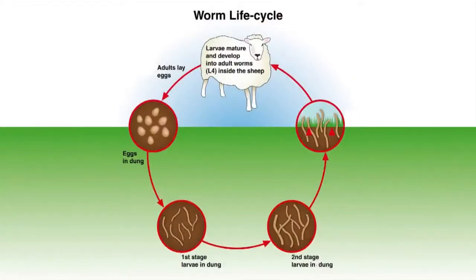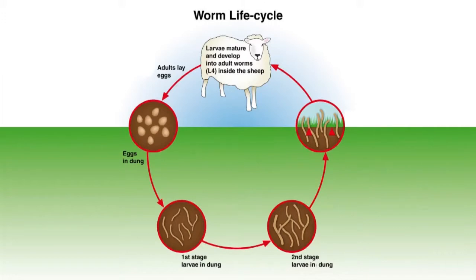The other thing we can use them for is to test whether or not our drench has actually worked. If we look at the life cycle, we go in and treat the sheep with an anthelmintic. But if that anthelmintic either hasn't been administered properly, or increasingly there's some resistance and we leave resistant worms alive in the sheep, then we really ought to know about that, because we are going to lose sheep performance if we don't deal with it.